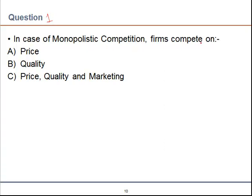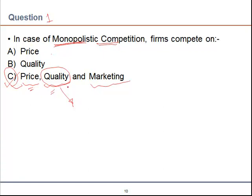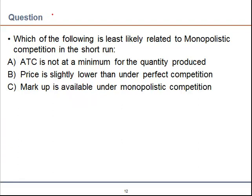Question one: In case of monopolistic competition, firms compete on which of the following? In monopolistic competition, there are many sellers and products are differentiated based on quality and advertising. Firms compete based on marketing and advertising, quality, and price. So option C is the right answer, because in monopolistic competition, firms compete based on price, quality, and marketing.